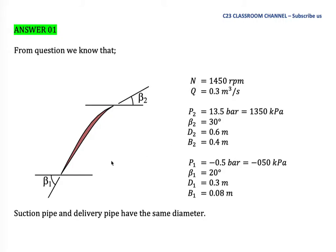I hope you remember the location of the blade angle. For example, if this is the tangent line at the inlet point, this is the angle of the blade. If we have a tangent line at the outlet, this is the blade angle at the outlet. From the question, suction pipe and delivery pipe have the same diameter, so if the diameter is the same, the velocity will be the same too.